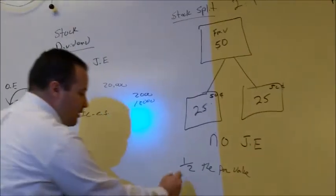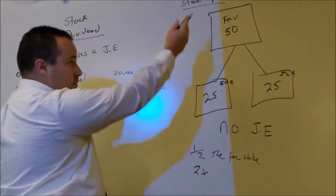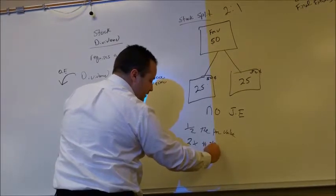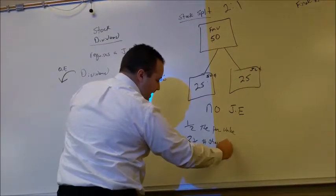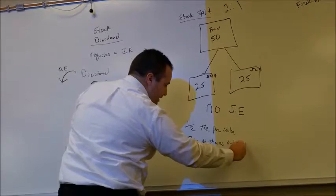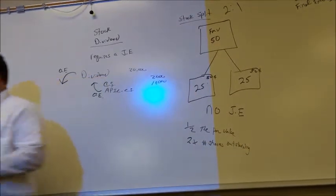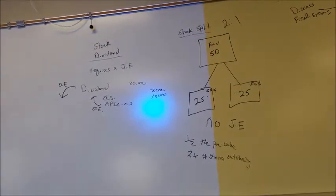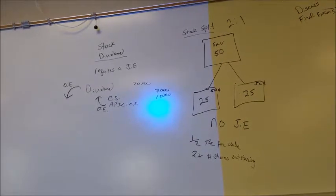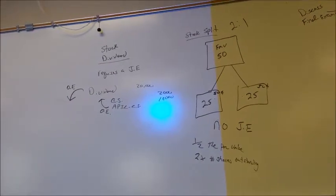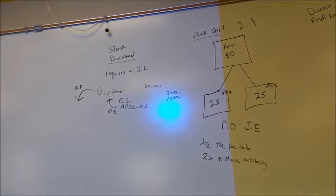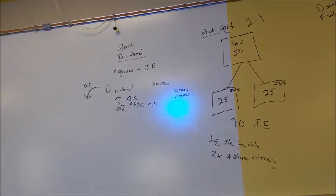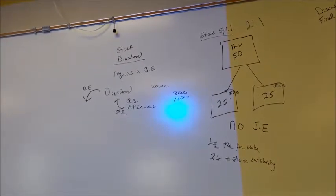It cuts in half the par value and doubles, if it's a two for one, the number of shares outstanding. So if I had one share outstanding, I now have two shares outstanding. That's all a stock split does. And then what that does in turn is it gets more people interested in the stock. Now it's $25, it's more attractive, and so it's bound to go up in value compared to it wouldn't go up as much if it was still at $50. Not as many people are interested in it.